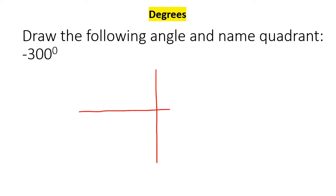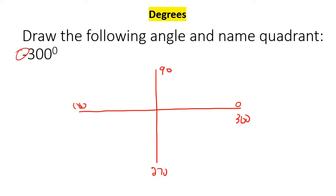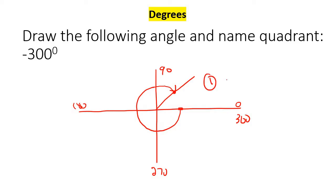Negative 300. So this is 0, 90, 180, 270, and 360. Because it's negative, you must go downwards instead of upwards. We're going to go 300 degrees backwards. So that's 180 up to there, then 270, and then 300 would be up to about there. Put a little dot, draw a line going through, and put an arrow to show that this part on the outside is the angle. And this is quadrant 1.